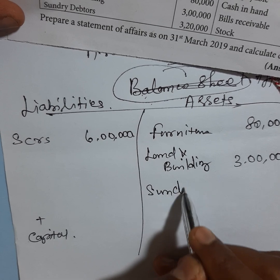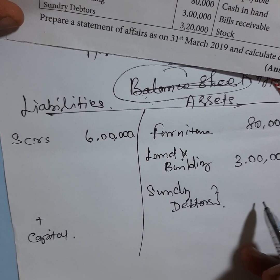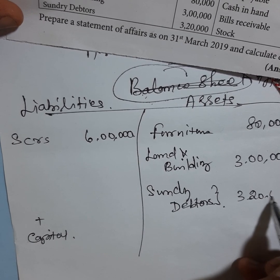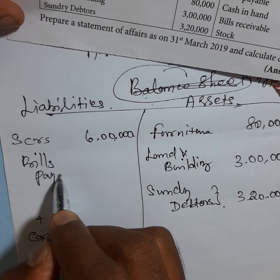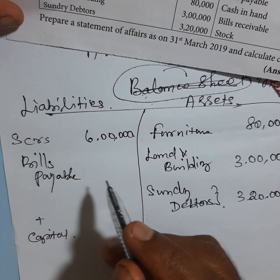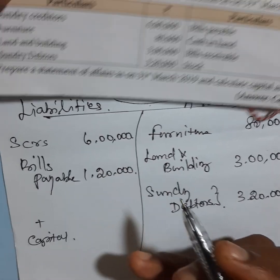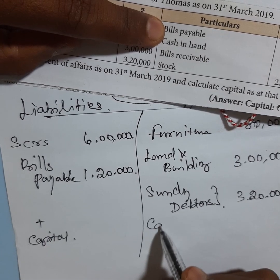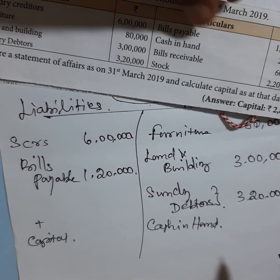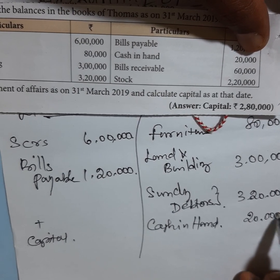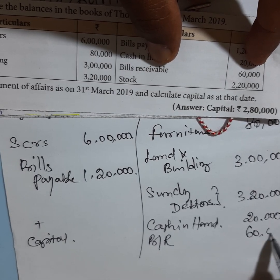Sundry debtors, so 3,20,000. Bills payable liabilities, amount 1,20,000. Cash in hand, amount 20,000. Bills receivable assets, so 60,000.